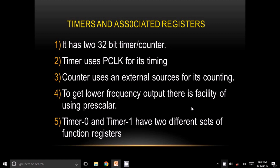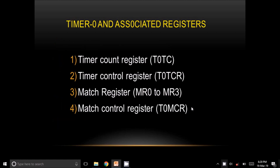To get a lower frequency from the output, there is a facility of a pre-scaler. In this session we will keep the pre-scaler value as 0. Timer 0 and Timer 1 have two different sets of special function registers. To configure Timer 0, we have to use four different registers.